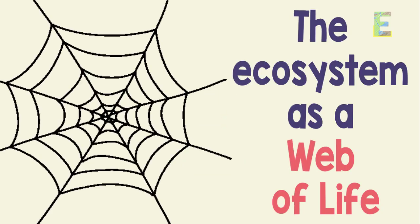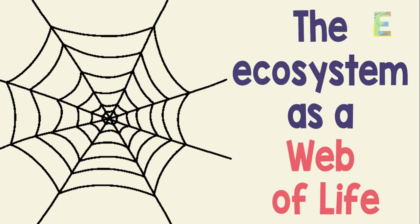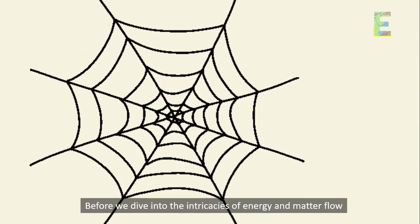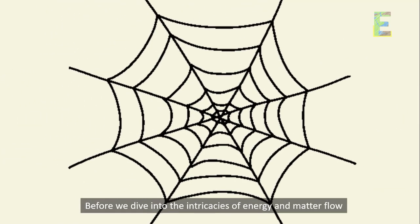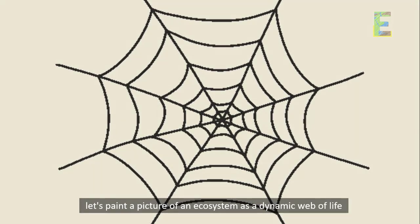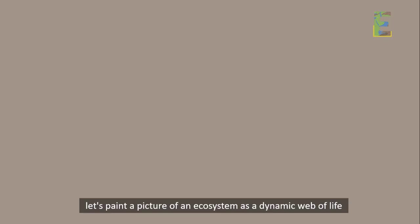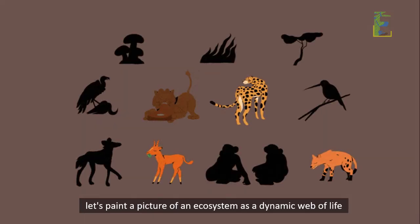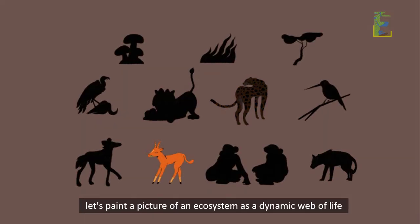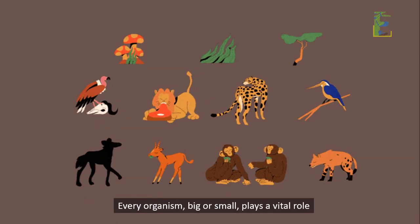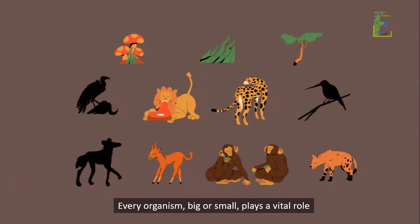The ecosystem as a web of life. Before we dive into the intricacies of energy and matter flow, let's paint a picture of an ecosystem as a dynamic web of life. Every organism, big or small, plays a vital role.